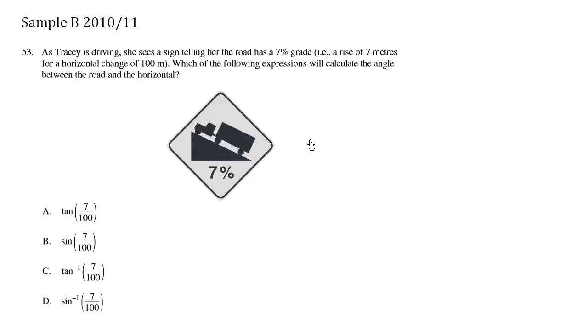This is 7 meters. So let me just redraw this here. So we rise 7 meters and we have a horizontal change of 100 meters. This is what we mean by 7% grade.